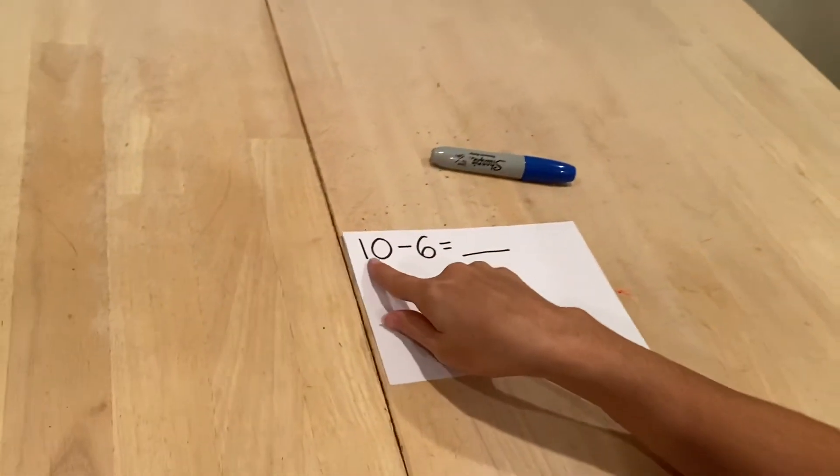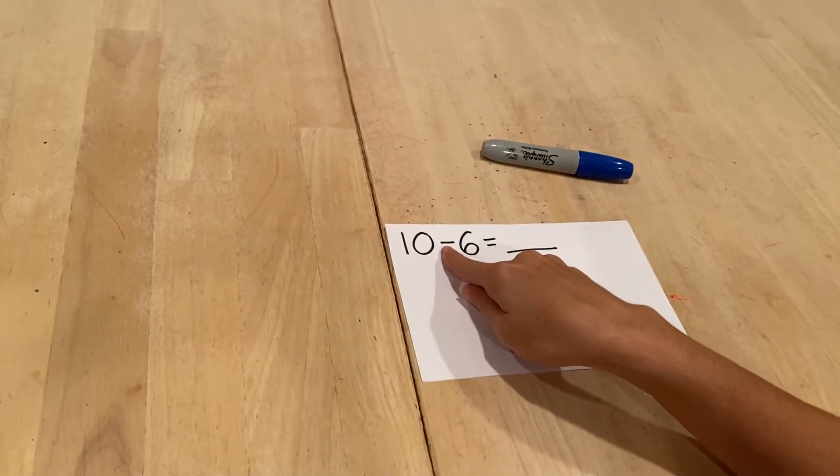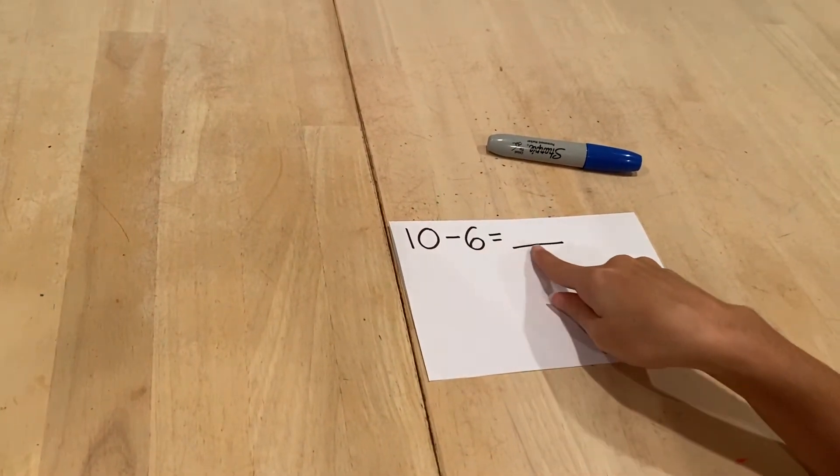Take a look at the subtraction number sentence we're solving now. 10 minus 6 equals blank.